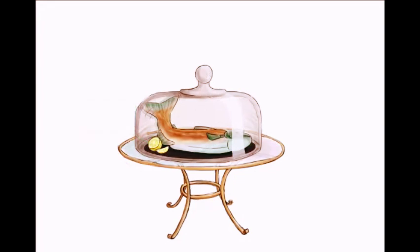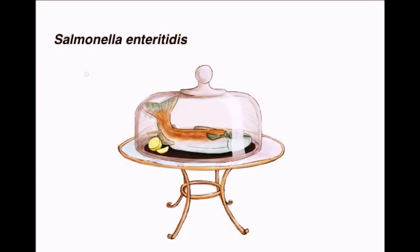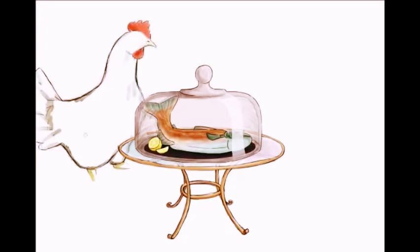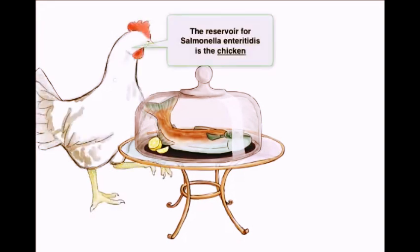Now it's time to differentiate between the two subspecies of Salmonella. Over on the left we'll have Salmonella enteritidis, and on the right, Salmonella typhi. On the left we'll have a chicken, which will remind us that we acquire Salmonella enteritidis by eating undercooked chicken, and that chickens are the main reservoir.